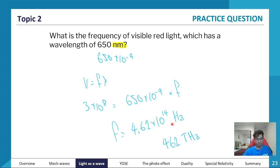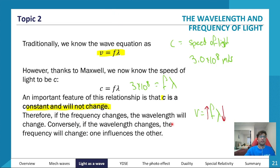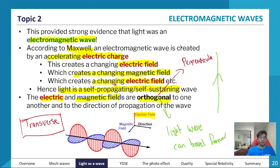So Maxwell proposed that light is actually a wave, and assuming light is a wave we can apply these wave equations. The thing is, there wasn't any conclusive evidence that light is a wave at this point — it was mainly just theory.